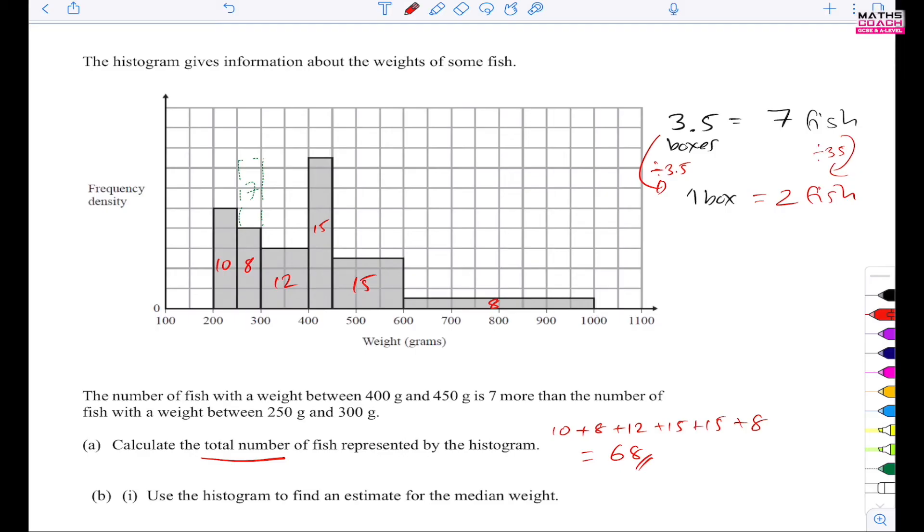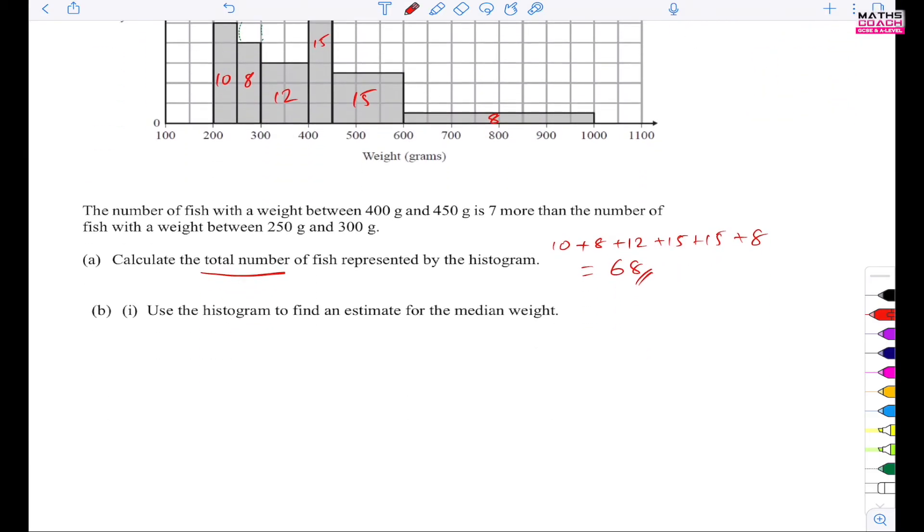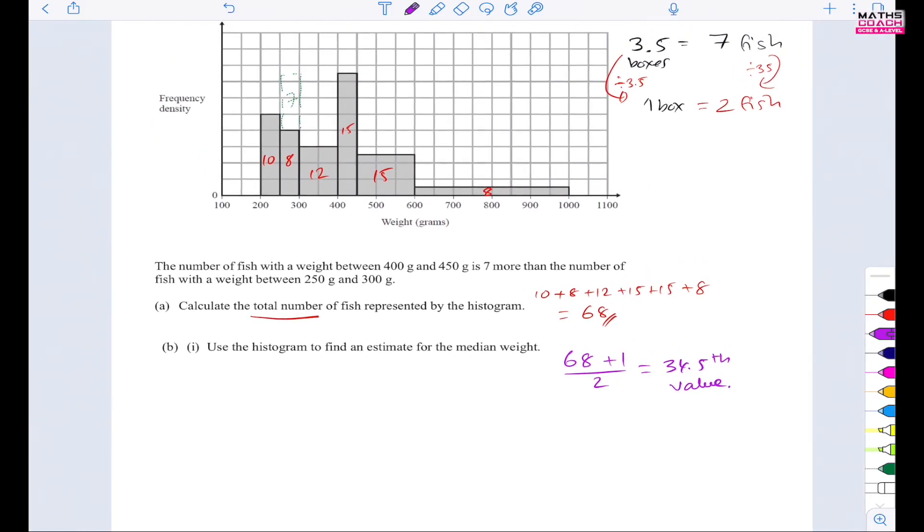Now let's look at the median. Now for the median, what do we know? Remember, the total number of fish is 68. So we're going to do 68 plus 1 divided by 2. And that gives us 34.5. So we're looking for the 34.5th value. Now with this question, I haven't got a table. So I'm going to quickly just draw the table in. So for the first one, it's 200 to 250. So that's going to be 200 to 250. And my frequency for that is 10. Next, I've got 250 to 300. And the frequency for that is 8. I've got 300 to 400. And the frequency for that is 12.